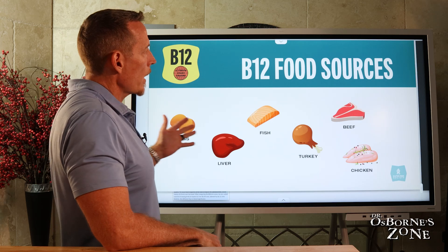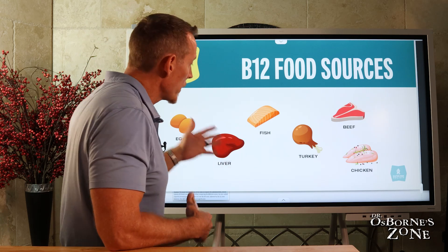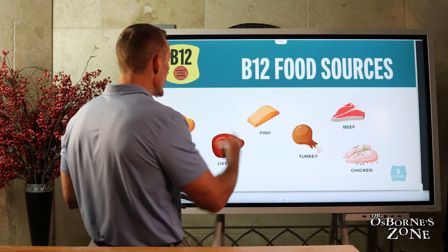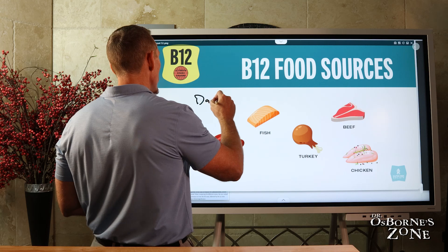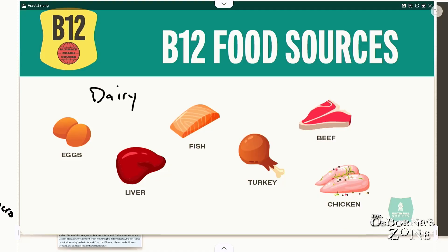Anything animal is going to have vitamin B12. Now one thing that's not on this picture list is dairy. Dairy foods are also good B12 sources in the diet as well, provided you're not allergic to dairy, provided the type of dairy that you're eating is not A1 dairy.